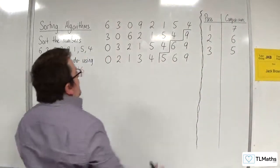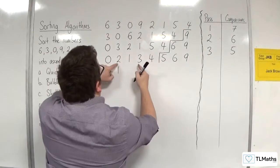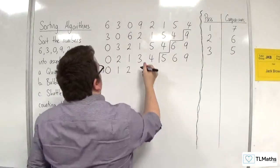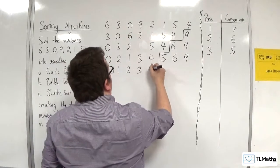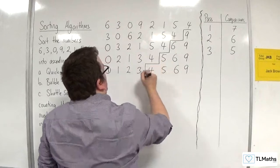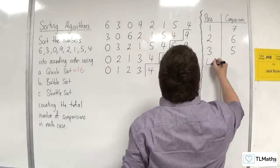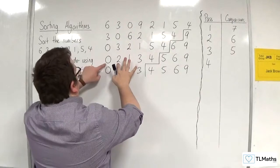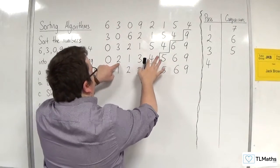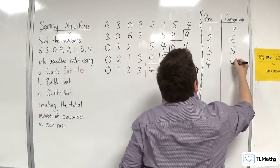Then we're comparing 0 and 2, then 2 and 1, then 2 and 3, then 3 and 4 — 4 bubbles to the top. So on the fourth pass, we made 4 comparisons.